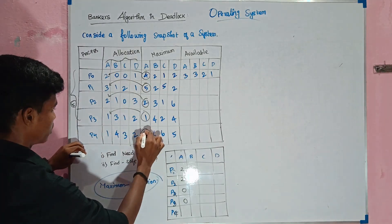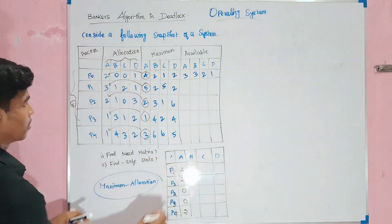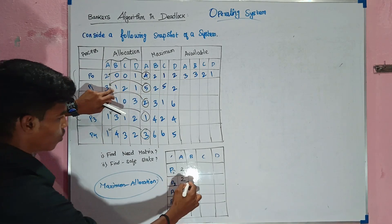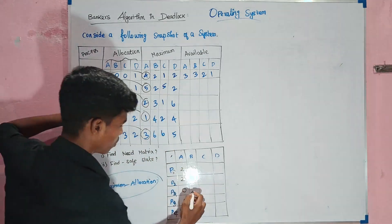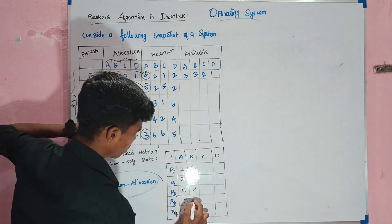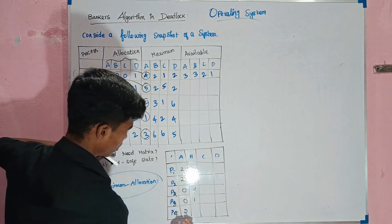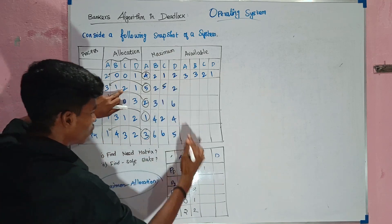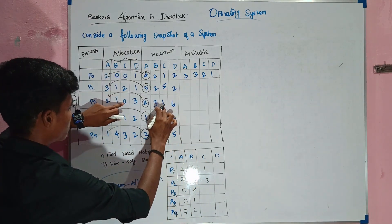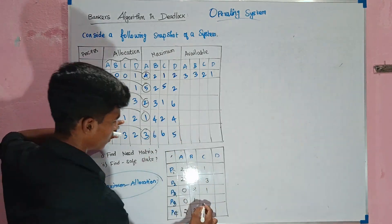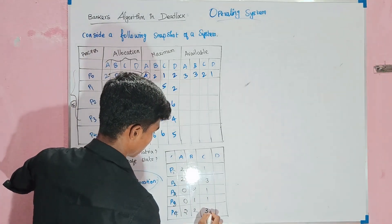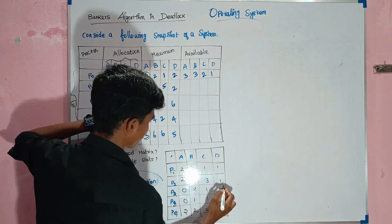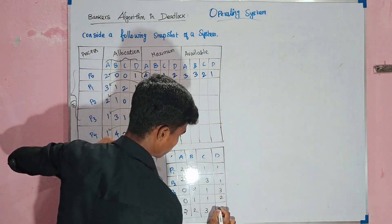Continuing the need matrix: 3 minus 1 = 2, 4 minus 3 = 1, 6 minus 4 = 2. For variable C: 1 minus 0 = 1, 5 minus 2 = 3, 2 minus 2 = 0. For variable D: 2 minus 1 = 1, 2 minus 1 = 1, 6 minus 3 = 3, 4 minus 2 = 2, 5 minus 2 = 3.